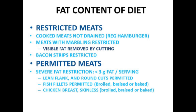So what are the meats that are permitted? For severe fat restrictions, the content of meat should be less than 3 grams of fat per serving. What offers that level of fat? You've got lean flank and round cuts. You also have fish fillets that are broiled, braised, or baked, and you've got skinless chicken breast that's broiled, braised, or baked. These are important considerations when identifying the menu items that are going to be found on your basic menu.